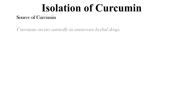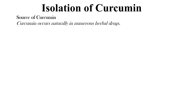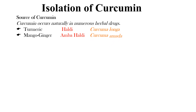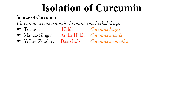Here we will begin with isolation of curcumin. First we will know the sources of curcumin. Curcumin occurs naturally in a number of plant materials, such as turmeric called haldi, with botanical name Curcuma longa; mango ginger called ambahaldi, with botanical name Curcuma emoda; and yellow jewelry called darchop, with botanical name Curcuma aromatica.